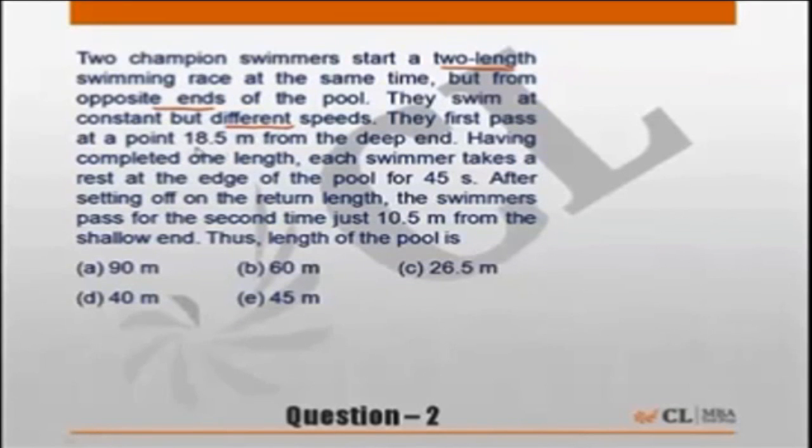They first pass at the point 18.5 meters from the deep end. Having completed one length, each swimmer takes a rest at the edge of the pool for 45 seconds. After setting off on the return length, the swimmers pass for the second time just 10.5 meters from the shallow end. What is the length of the pool?